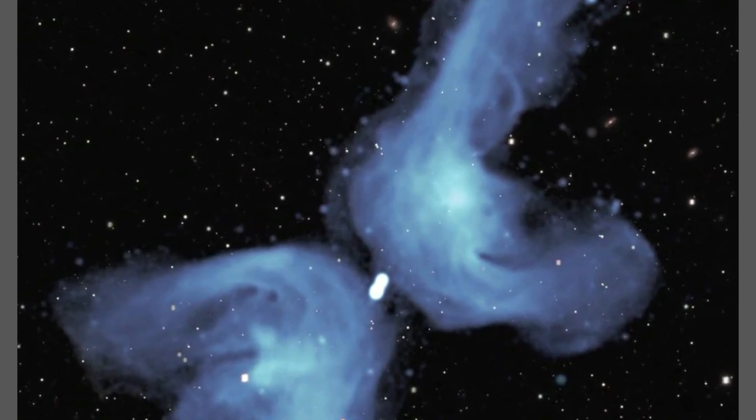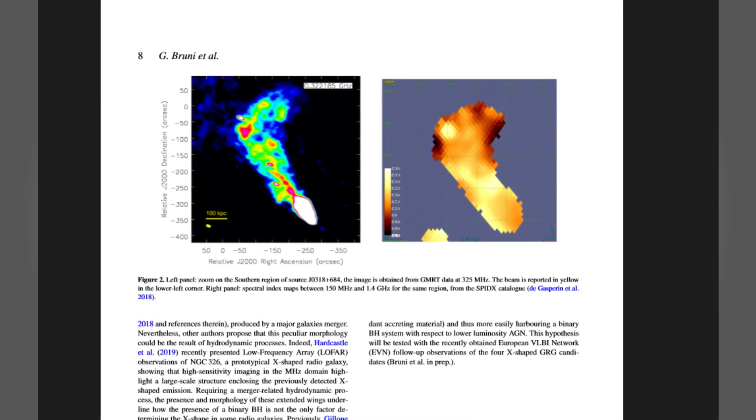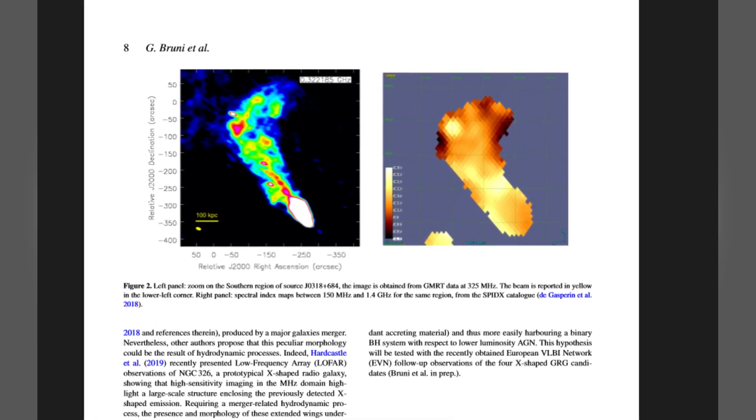Galaxies with twin jets shooting off in opposite directions are common, but the cause of the elaborate X-jets was uncertain until the Meerkat telescope in South Africa took a close look.